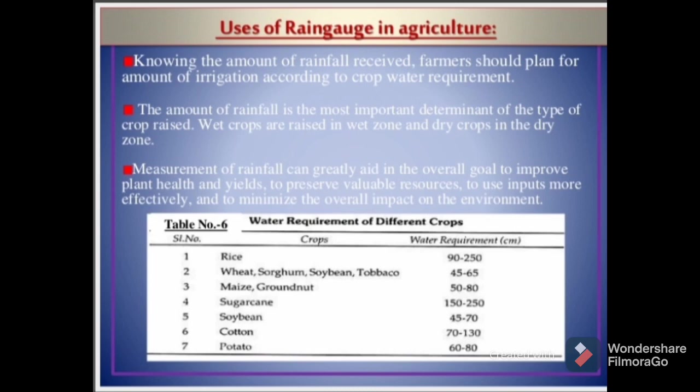Table number 6 shows the water requirement of different crops, including rice, wheat, sorghum, soybean, tobacco, maize, groundnuts, sugarcane, cotton, and potato.